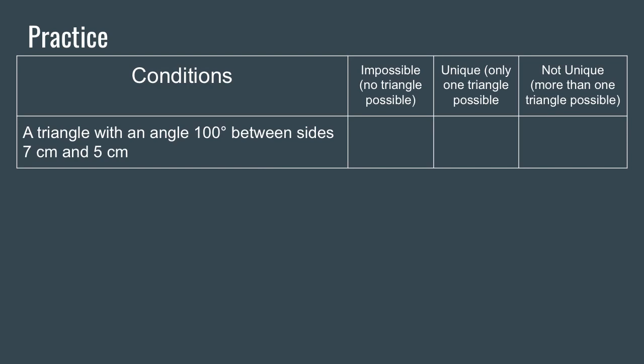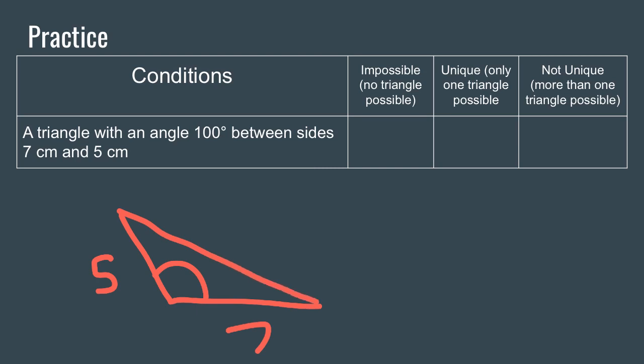Here's another one: a triangle with an angle of 100 degrees between sides 5 and 7. You have the 5 on one side, the 7 on the other, and your 100 degrees in between. We've learned that if the angle is in between the two sides — SAS — it's going to make a unique triangle. The angle locks the sides into place, resulting in only one possible triangle.